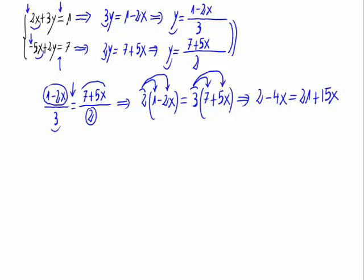The minus 4x goes as plus 4x to the other side and the 21 goes as minus 21, so we have 2 minus 21 equals 15x plus 4x.